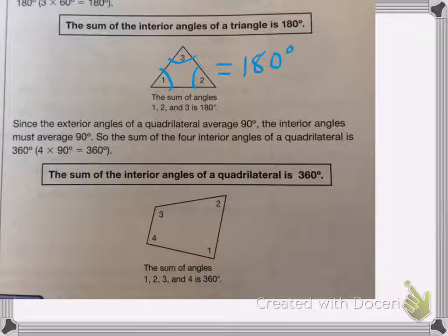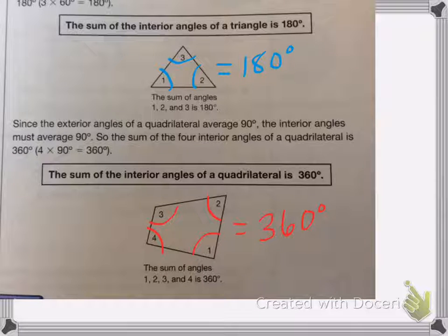And then with the quadrilateral, if I add up all four angles, it is going to equal 360 degrees no matter what any of the angles are. All of them added together will always equal 360 degrees.